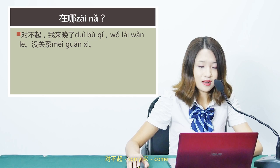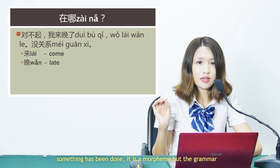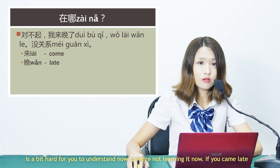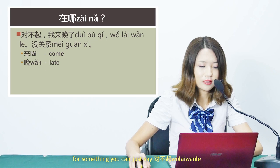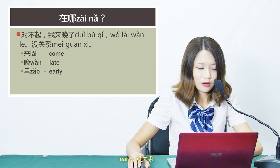下一句 — next sentence. 对不起，我来晚了 — Sorry, I came late. 对不起 is sorry. 来 means come, 晚 means late, and 了 indicates something has been done — the grammar is a bit complex so we won't go into detail now. Just remember: if you are late for something, say 对不起，我来晚了. Note that 早 means early. 没关系 — it doesn't matter.